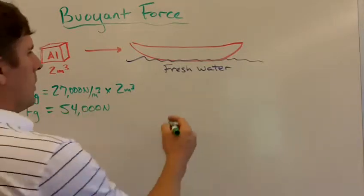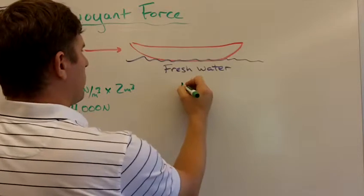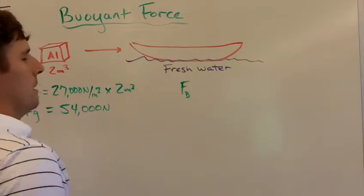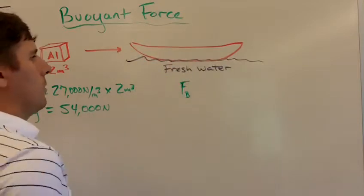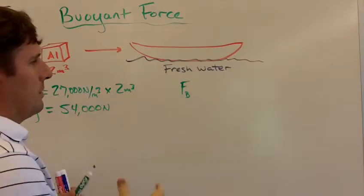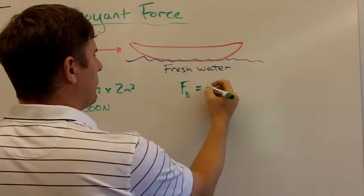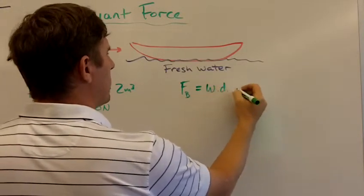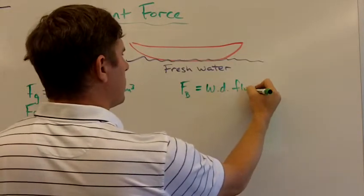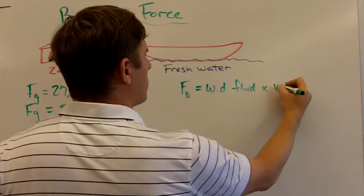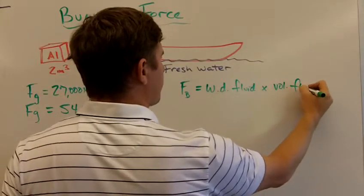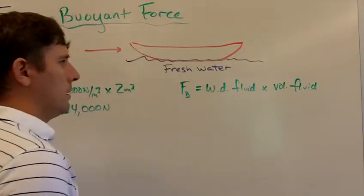Okay, let's say that the buoyant force, we want to calculate what will be the volume of water that will have to be displaced by this canoe in order to make it float. So the buoyant force is the weight density of the fluid it's in times the volume of fluid displaced. Okay, pushed aside.